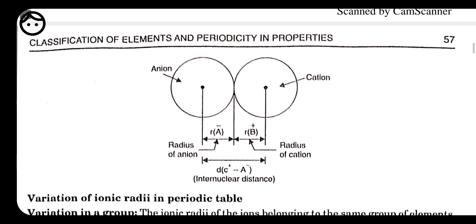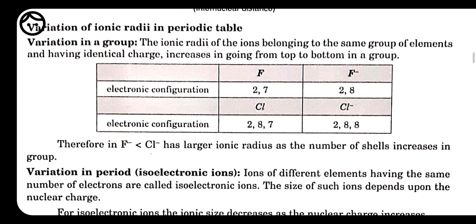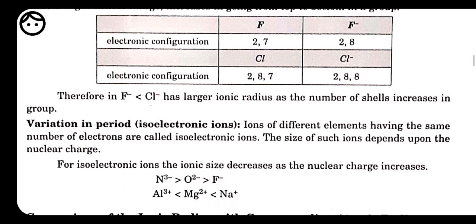There is also variation in groups and periods for ionic radii. The ionic radii of ions belonging to the same group with identical charge increase going from top to bottom. For example, chlorine has a larger ionic radius than fluorine, as the number of shells increases in the group.